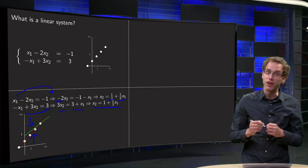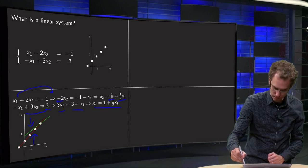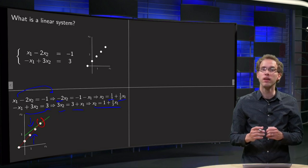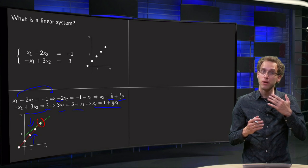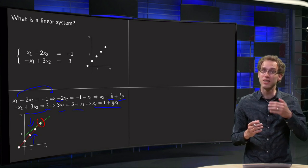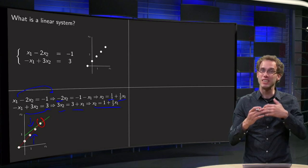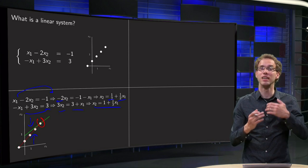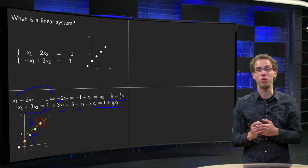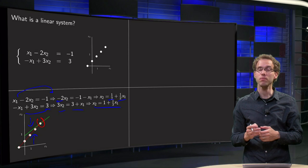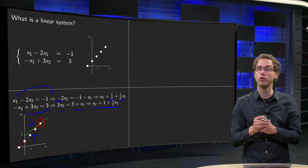We see one very special point — the point where both lines intersect. That point is on both lines, which means it satisfies both the first and the second equation. But a point satisfying both equations is exactly the solution of our linear system. So we can view one linear equation as points on a line, the second linear equation as points on another line, and the point where both lines intersect is exactly the solution of our linear system.